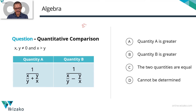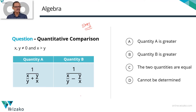This is an easy GRE quantitative reasoning practice question. It is a quantitative comparison question from the topic of algebra. Let's quickly run through the question and compare these two quantities.